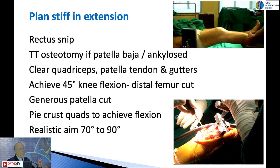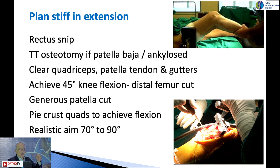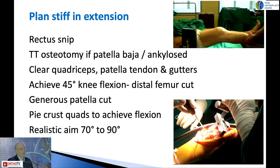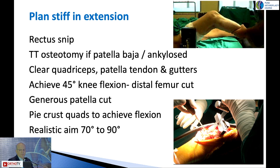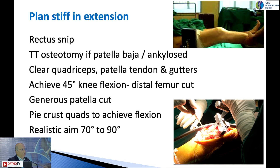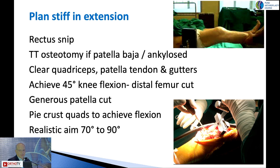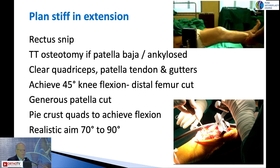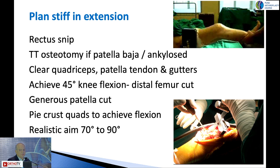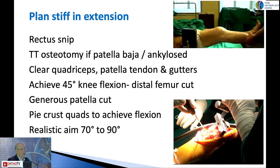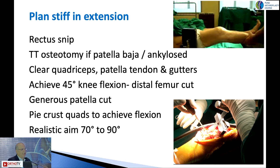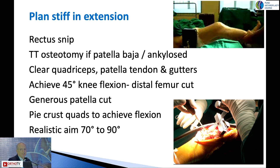Once you've achieved 45 degrees of knee flexion, this allows you to take your distal femoral cut, which gives you some working room to progress. To regain quadriceps length, you do multiple pie-crusting of the quadriceps and take a slightly more generous patella cut. You have to have a realistic aim and tell the patient clearly: you're not going to get good flexion — you're going to get something like 70 to 90 degrees at best.